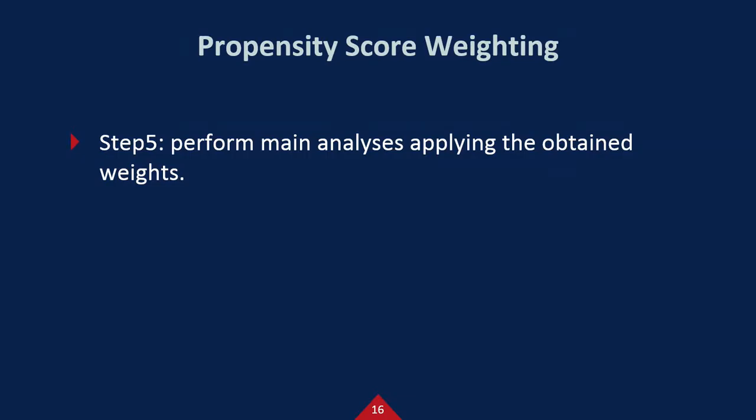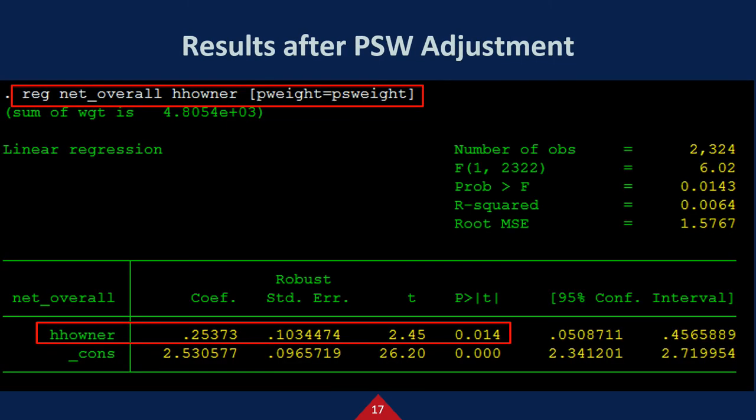As a final step, we need to perform substantial analysis applying the obtained weight. I ran a simple OLS applying this weight. This is an outcome, and this is the explanatory variable, which is a treatment, home ownership. It's very simple, right?